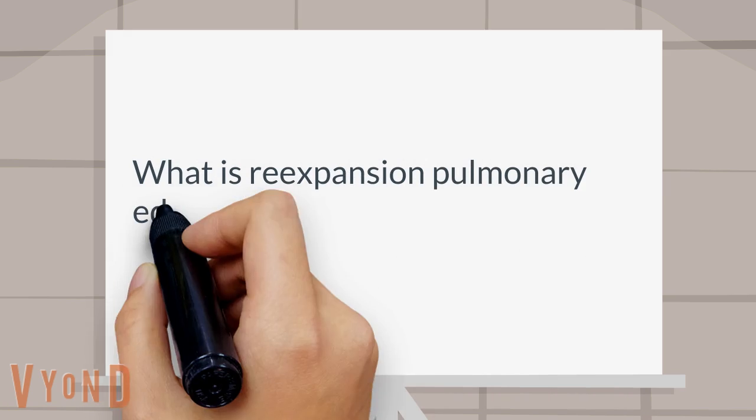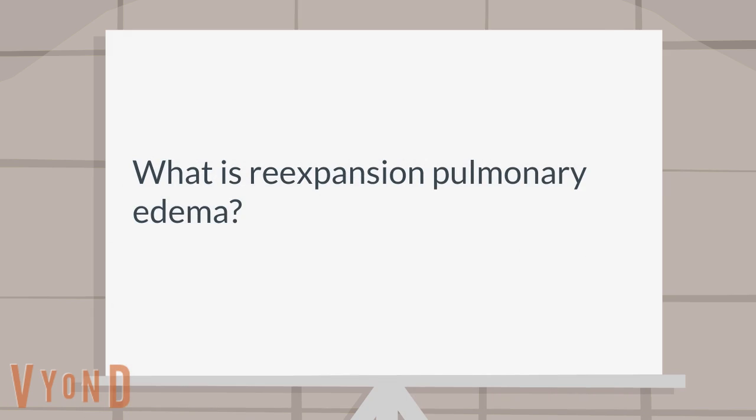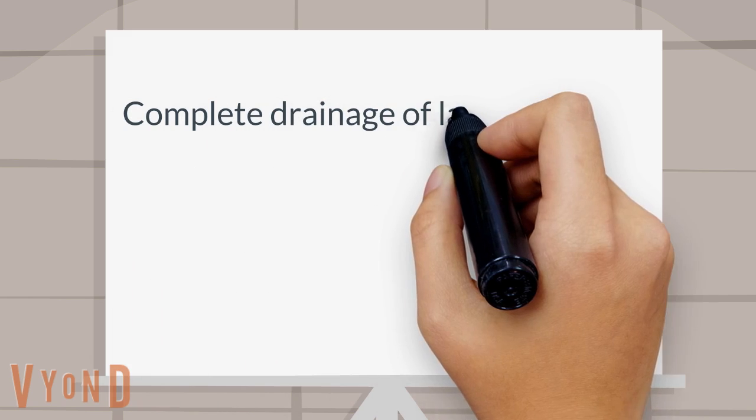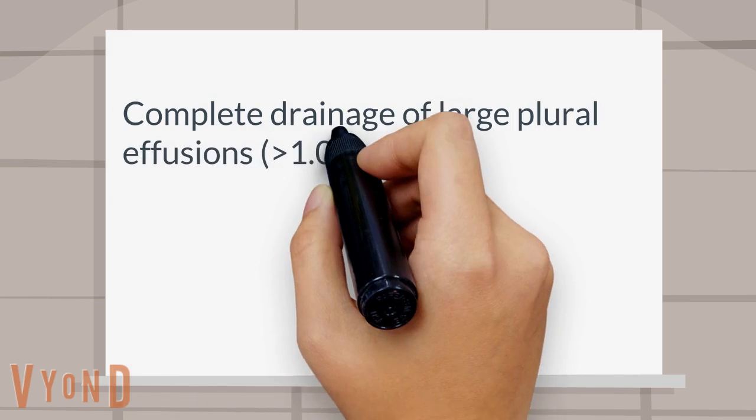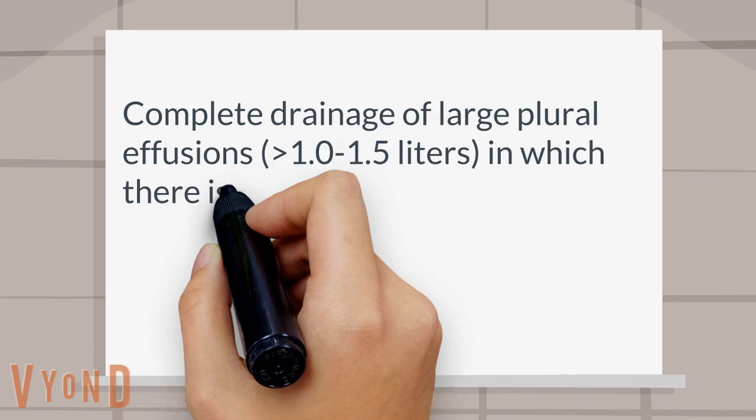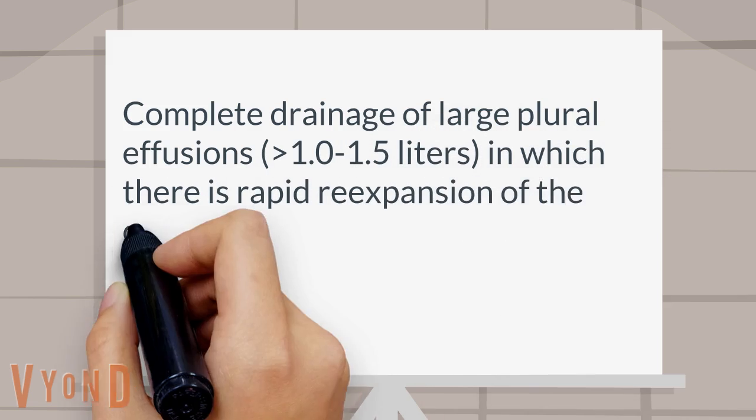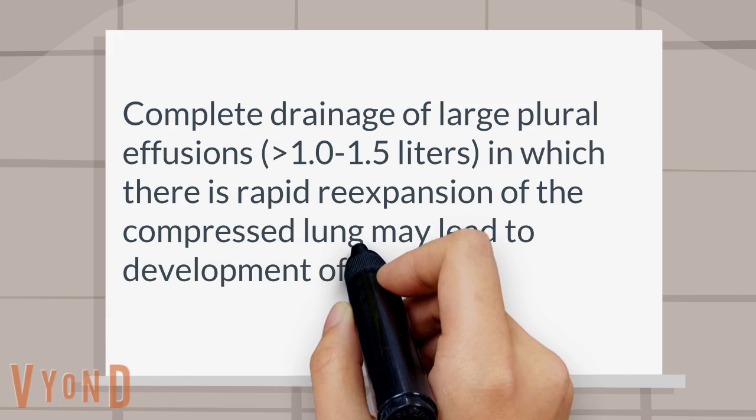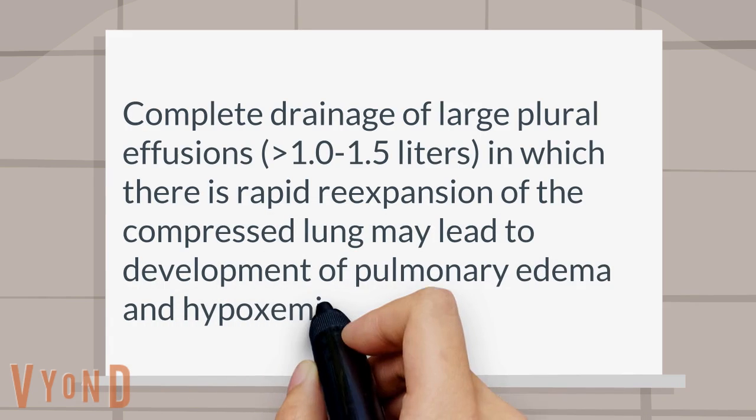What is re-expansion pulmonary edema? Complete drainage of large pleural effusions greater than 1.0 to 1.5 liters, in which there is rapid re-expansion of the compressed lung, may lead to development of pulmonary edema and hypoxemia.